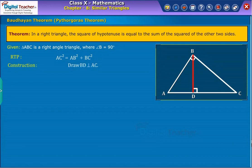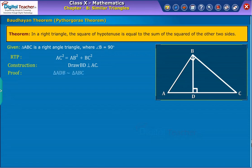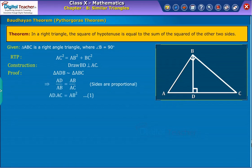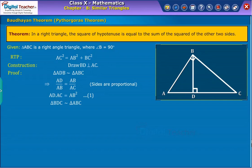Here, construction: draw BD perpendicular to AC. Let us prove. Since triangle ADB and ABC are similar, we write as equation 1, which is shown on screen. And also triangles BDC and ABC are similar, therefore we write as equation 2, which is shown on screen.